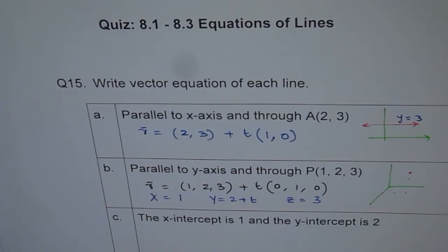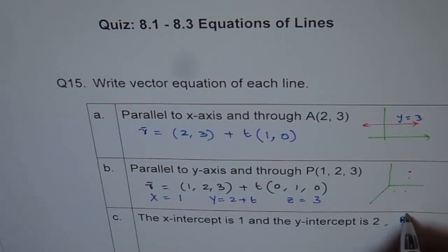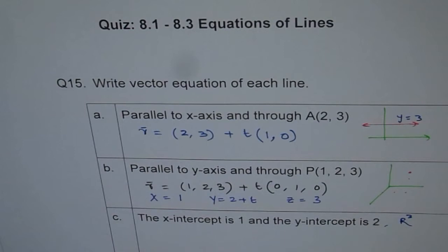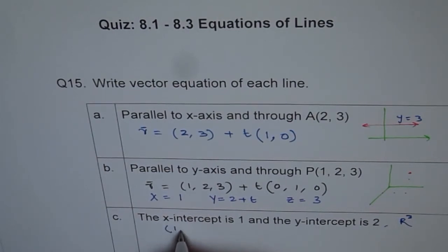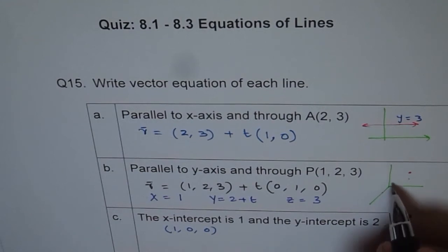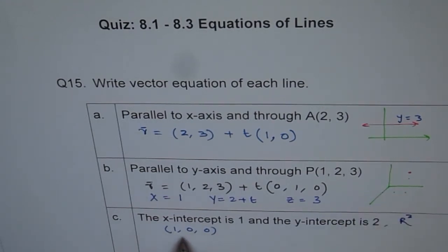Let's move on to part C. The x-intercept is 1 and the y-intercept is 2. You have to find vector equation of the line. How are you going to do this? If x-intercept is 1, and let's assume we are talking about R3, 3 dimensions now. If x-intercept is 1, that means what is the point? x-intercept 1 means 1 for x and 0 for others. x-intercept is 1. So, this point is 1, 0, 0.